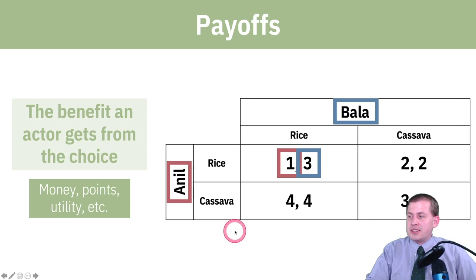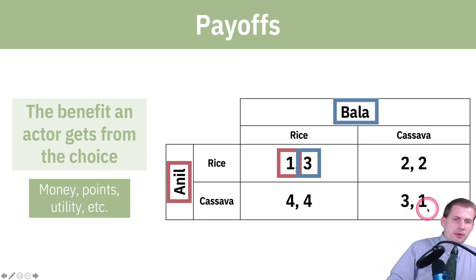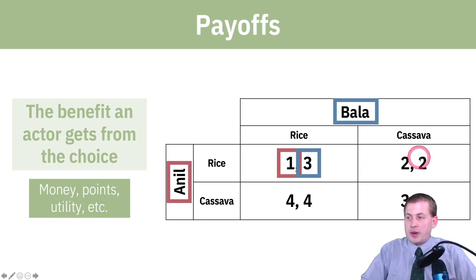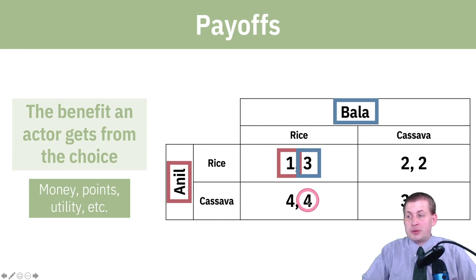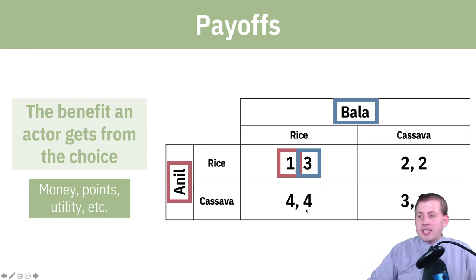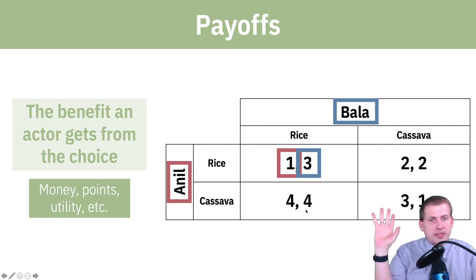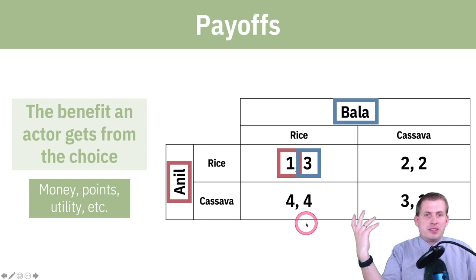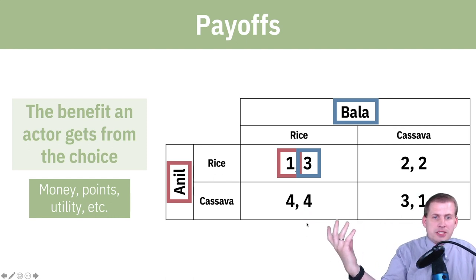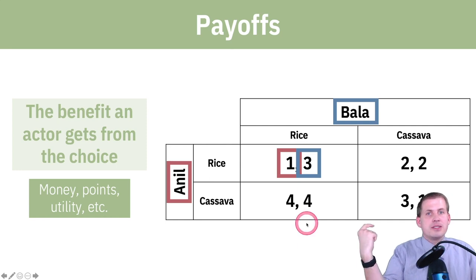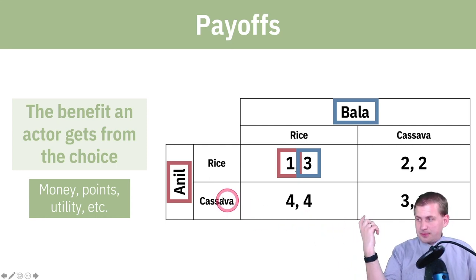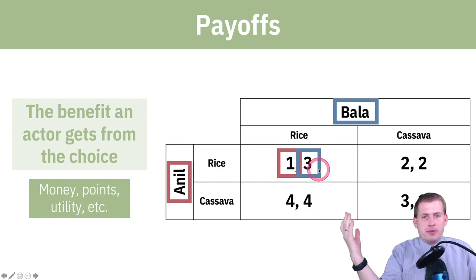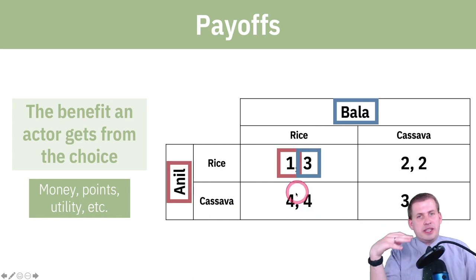If Anil grows cassava and Bala grows cassava, they get three and one happiness points respectively. If Anil grows rice and Bala grows cassava, they each get two. If Anil grows cassava and Bala grows rice, they each get four happiness points. Looking at this table, you generally want to find the most socially optimal outcome — the square where both players get the most points — which in this case is Anil grows cassava and Bala grows rice, because then they each get four happiness points, since that's what they're each best at, and they can trade.